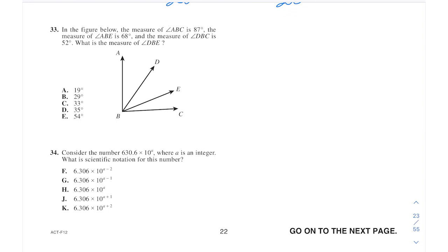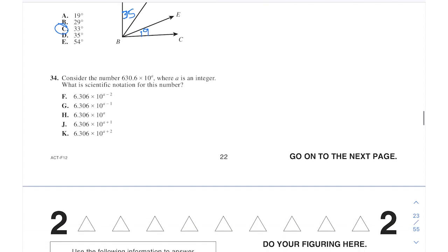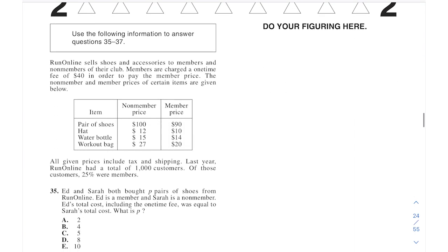ABC is 87 for this whole thing. ABE is 68. So that means this little piece in here is 19. DBC is 52. So that means that this part in here is going to be 35 for that missing piece. And then DBE would be that difference, which here would be 33.